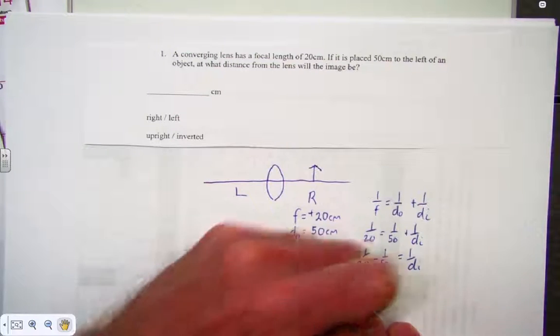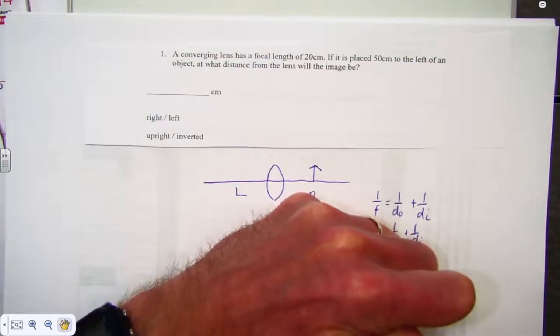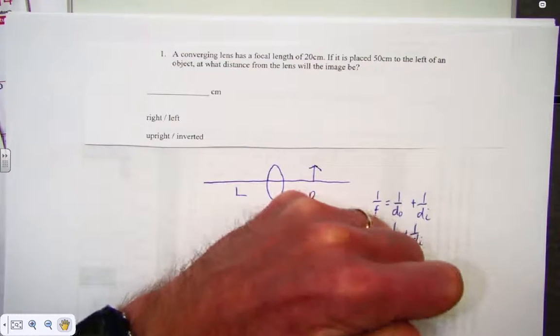And remember to take the inverse to get what di actually equals. Di comes up in 33.3 centimeters positive.